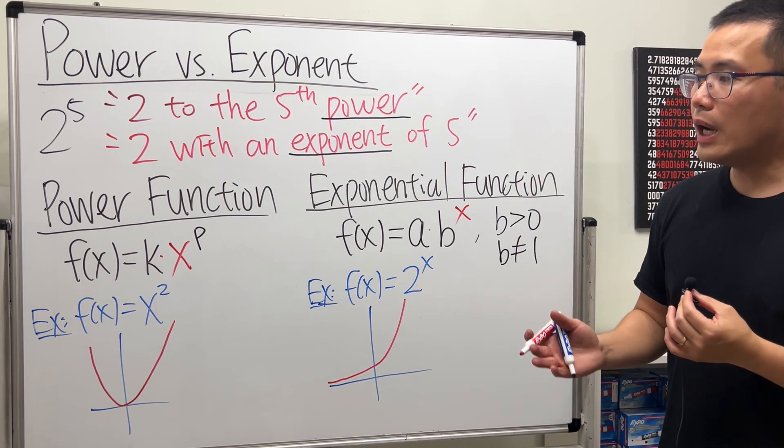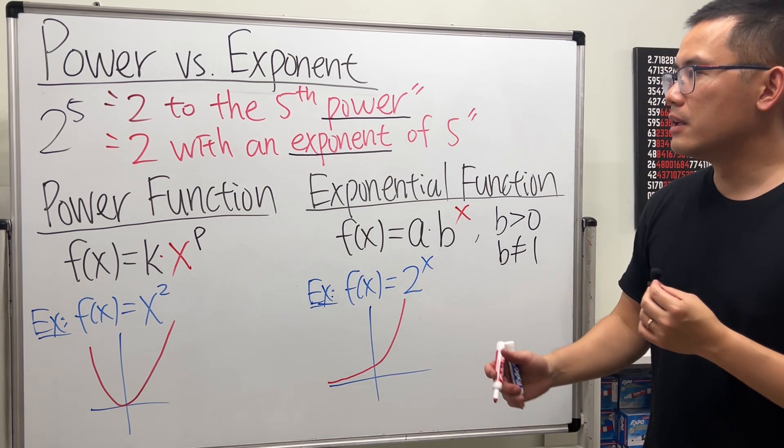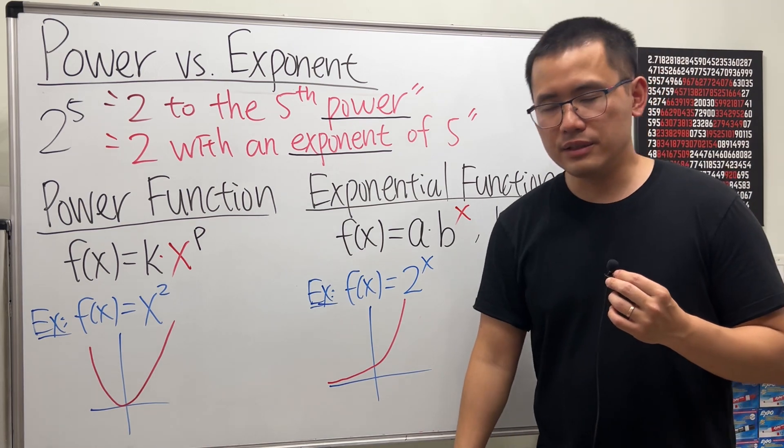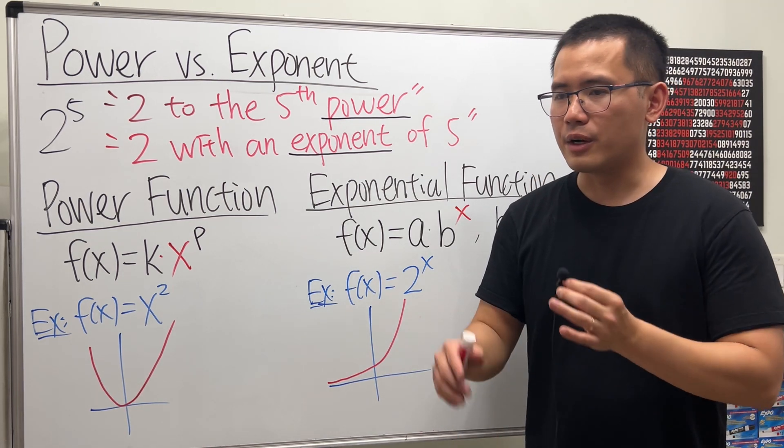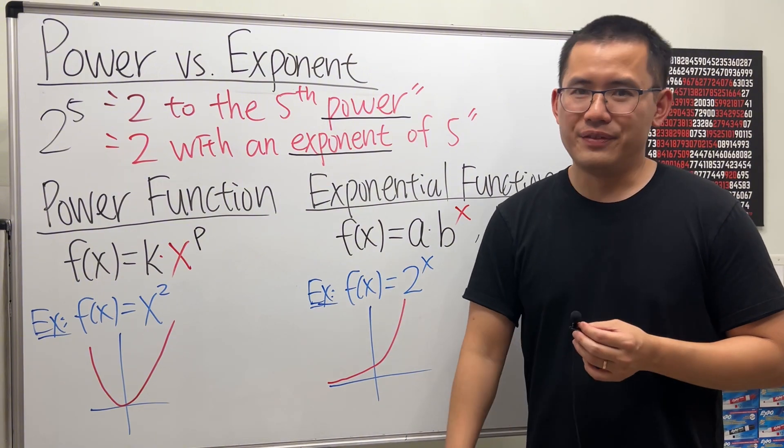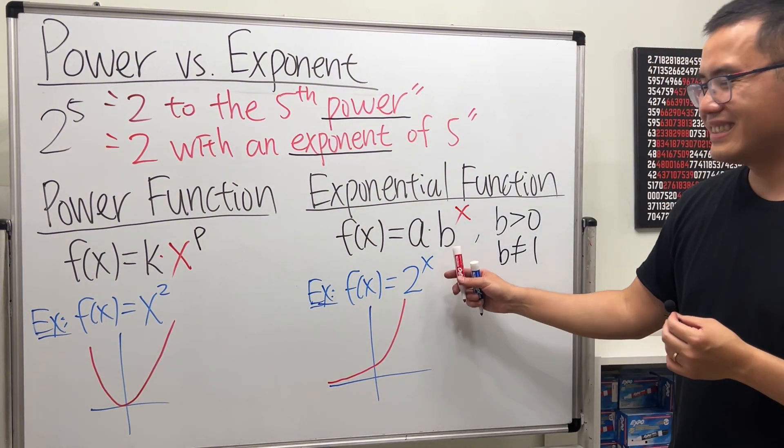So I think this is how I would like to explain that we have the term power versus the term exponent. One thing that I still don't know is, why do we have the term radical versus root? If you know, please let me know. But for now, that's it. Thank you.